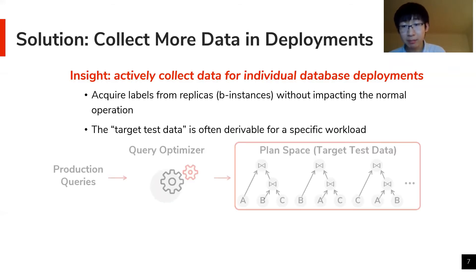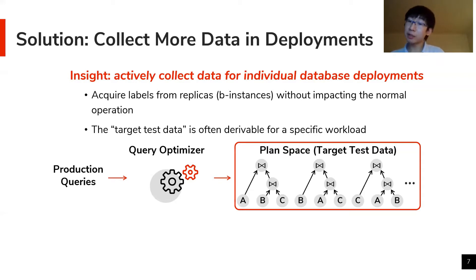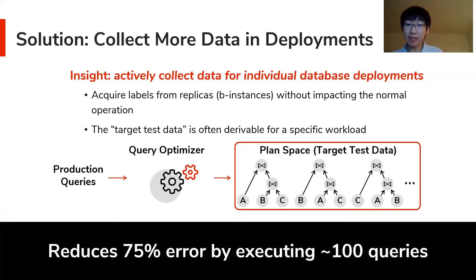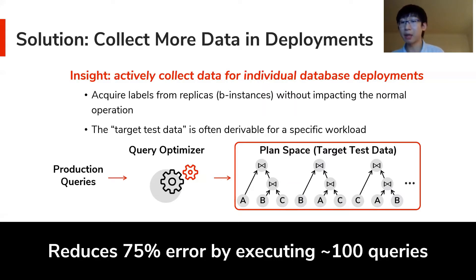The second observation is that the target test data of ML-for-database applications is often derivable for a specific workload in deployments. For example, for a specific set of production queries, an ML-enhanced query optimizer would enumerate a plan space where the ML model needs to predict. By intentionally choosing labels to acquire from this target test data and retraining the ML model, our technique reduces up to 75% model prediction error for individual deployed databases by only executing roughly 100 queries on the replica.